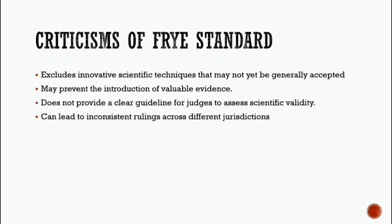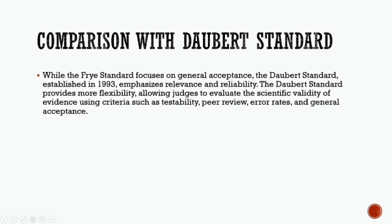Now let's look at the comparison with the Daubert standard. The Frye standard focuses on general acceptance. The Daubert standard was established in the year 1993, whereas the Frye standard was established in 1923. The Daubert standard emphasizes relevancy and reliability and is more flexible, allowing judges to evaluate scientific validity using different criteria: testability, peer review, error rates, and general acceptance.